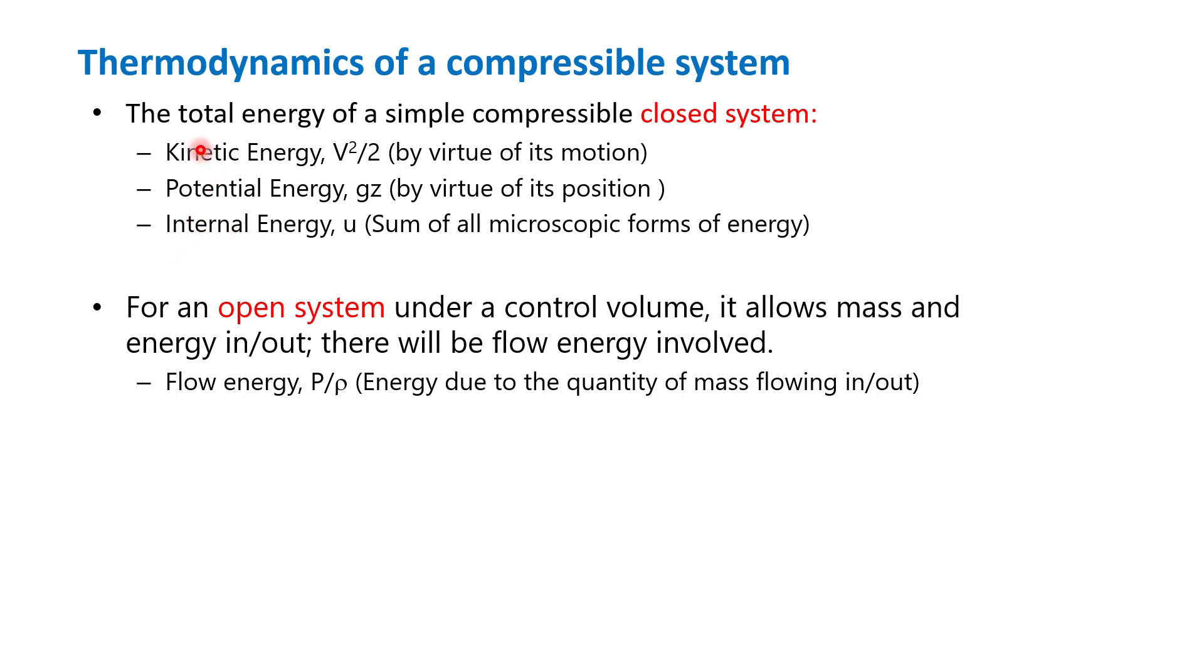In this case, on top of the three other forms of energy in the closed system, we have an additional form of energy, which is a flow energy defined by P over ρ. By combining all of these four, the total energy in a system equals the flow energy plus internal energy plus kinetic energy plus potential energy. Since we have the definition for the enthalpy equal to flow energy plus internal energy, we can simplify this equation to this form.